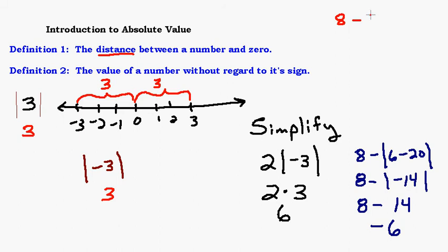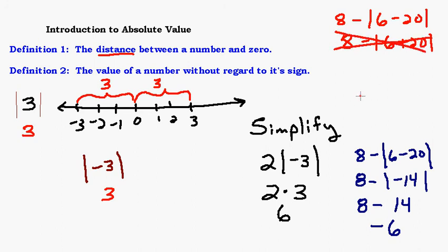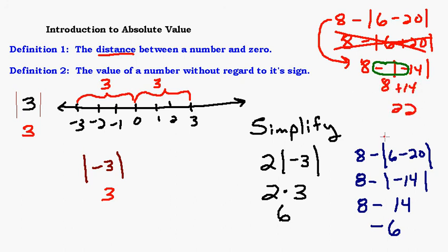There are a lot of ways to do this wrong. One common mistake is to say 'absolute value makes everything positive, so I'll just change the minus to a plus' and do six plus twenty — no, that's wrong. Get it down to one number first, then take the absolute value. Another pitfall: if you see eight minus the absolute value of negative fourteen, don't turn that into eight plus fourteen and get twenty-two. The negative fourteen is inside the absolute value — you evaluate that first and get positive fourteen, then subtract: eight minus fourteen equals negative six.